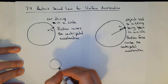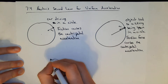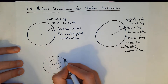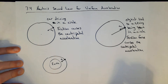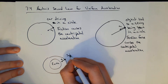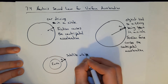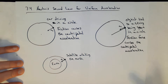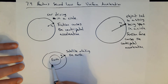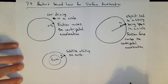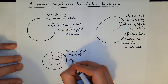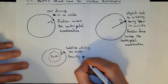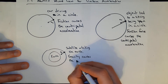Speaking of gravity, if we have the Earth and a satellite orbiting around it, there is still centripetal acceleration since it's moving in a circle. The force pointing toward the center of the Earth for this satellite is gravity — gravitational force causes the centripetal acceleration.